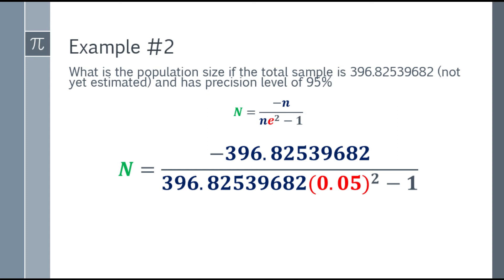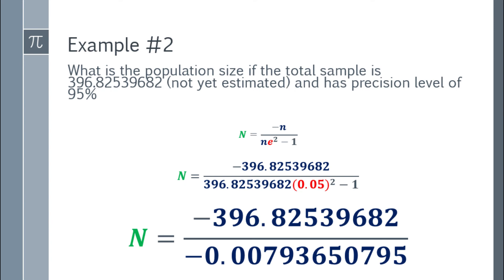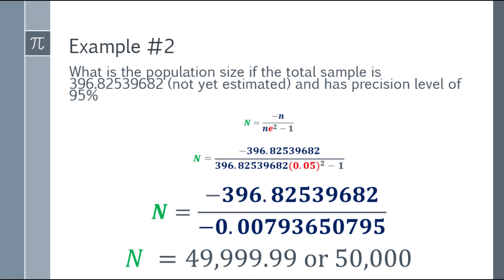In your calculator, 0.05 squared, then multiply by 396.82 and so on with the decimal. The answer, minus 1, and you will get an answer for the denominator of negative 0.00793650795. Now, divide them, and it will be positive because both are negative. You will have an answer of 49,999.99, or 50,000. So for the problem, what is the population size if the total sample is 396.82 and so on, and has a precision level of 95%, the answer is 50,000.